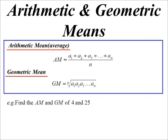So if I had two numbers, 4 and 25, the arithmetic mean: add them together, divide by 2, 29 over 2.